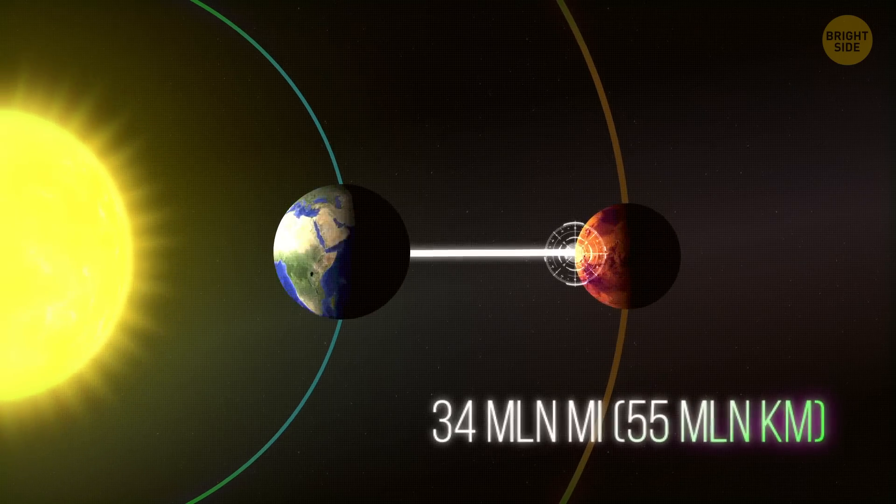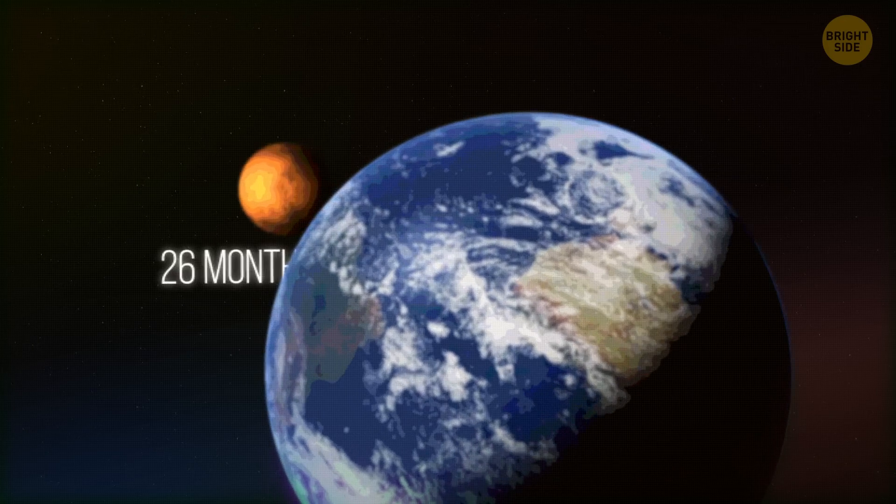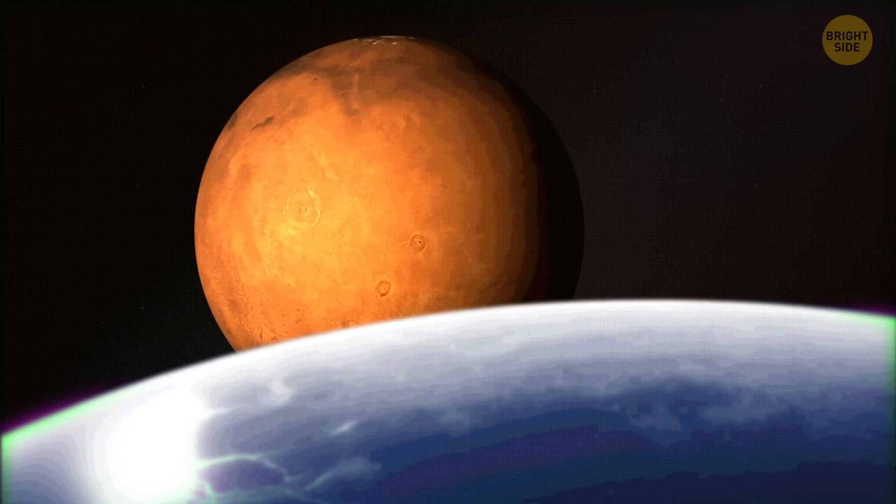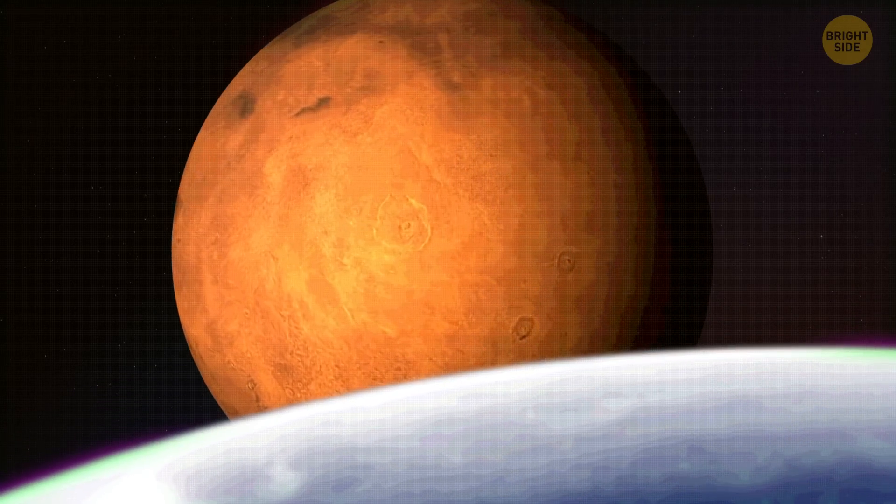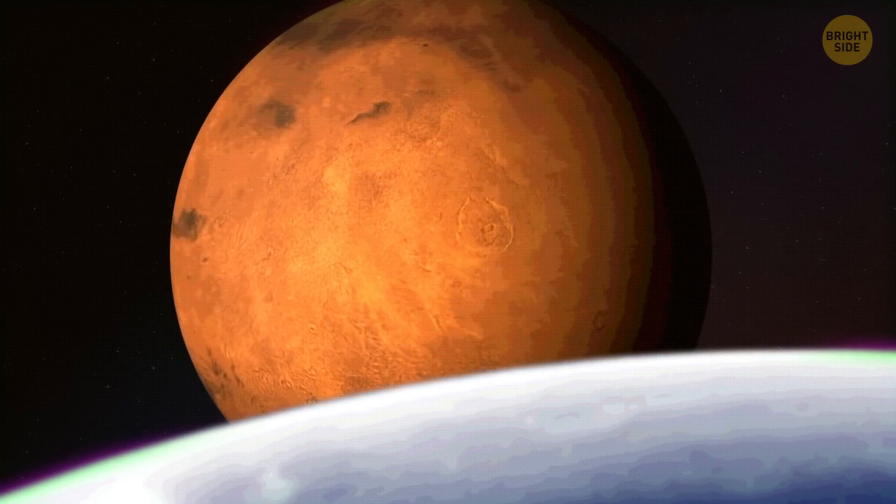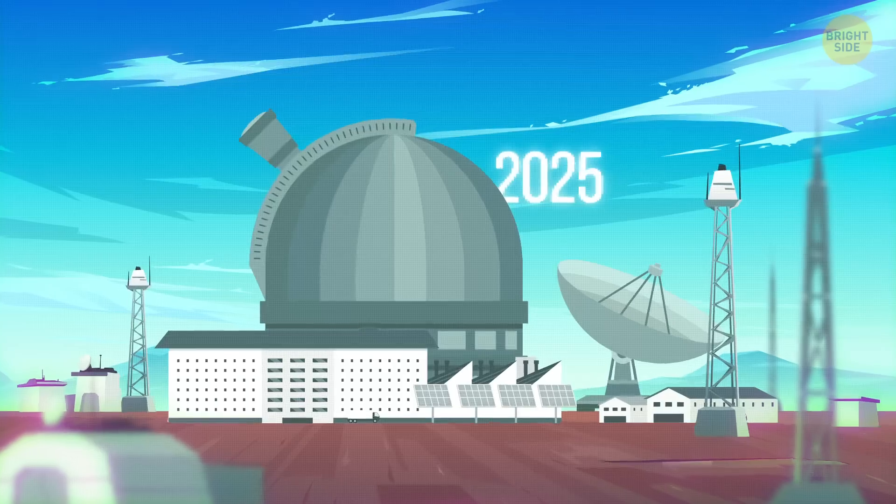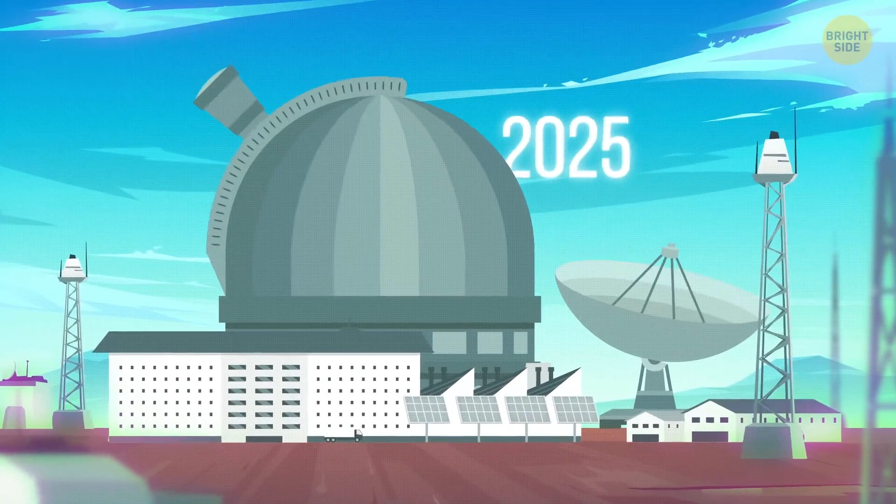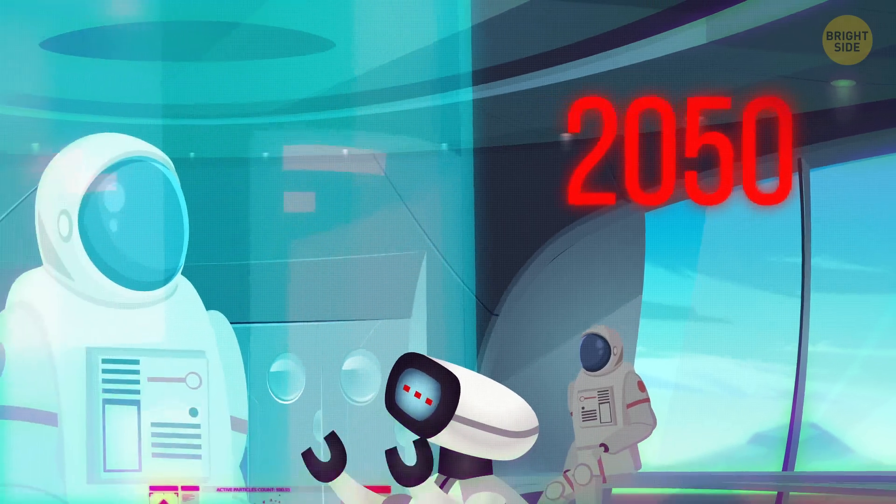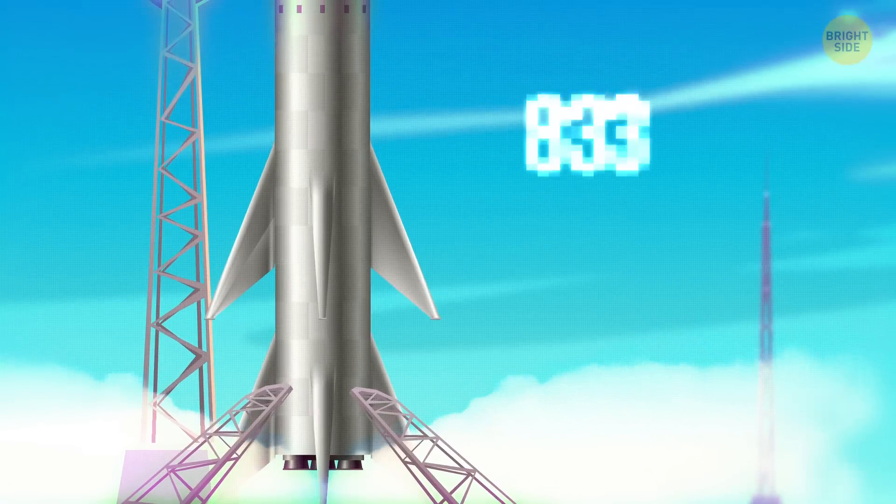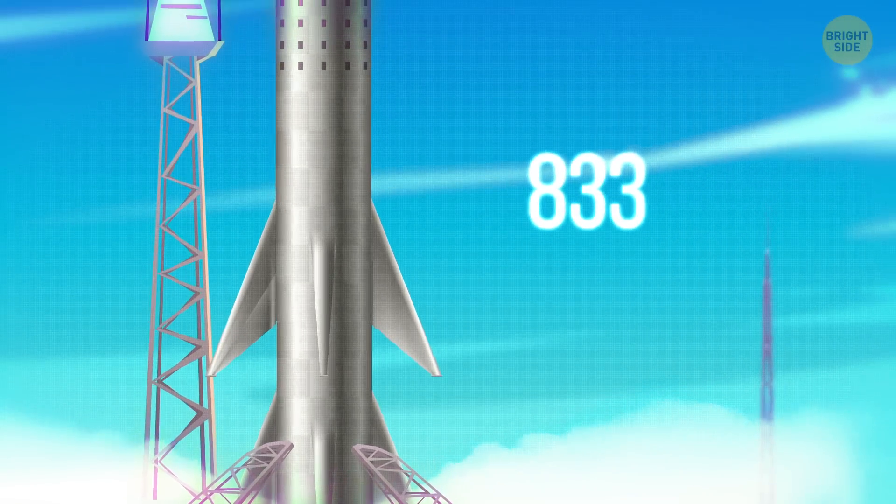This is our target. Once every 26 months, Earth and Mars meet at this distance. So this is the perfect time to launch a rocket to keep the flight time as short as possible, between 6 and 8 months. If the first flight is scheduled for 2025, and we plan to complete the mission in 2050, we would only have 12 such flight windows. We would need to launch at least 833 ships in each window.